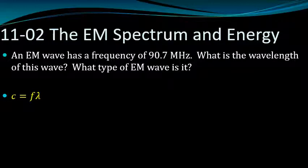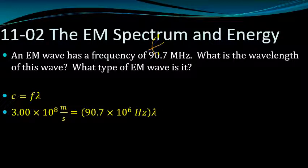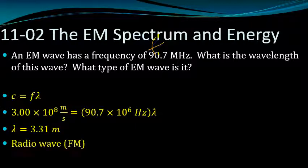Since we're talking about an EM wave, we have the speed of light. c equals 3 times 10 to the 8th. Our frequency is 90.7 mega—mega is times 10 to the 6th. Divide and you get a wavelength of 3.31 meters. If we go back to that previous chart, 3.31 meters is a radio wave in the FM area.